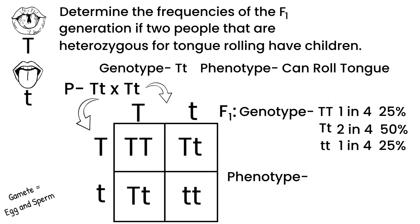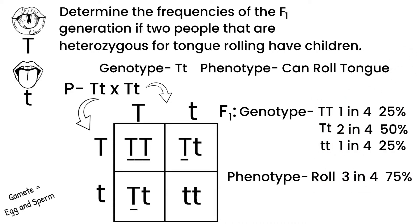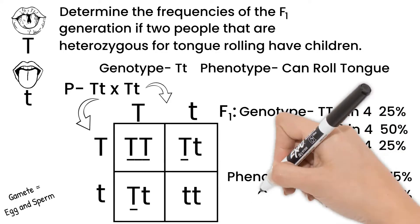Now for phenotypes. 3 out of 4, or 75%, will be able to roll their tongue because they have that dominant allele, while 25% will not be able to roll their tongue.